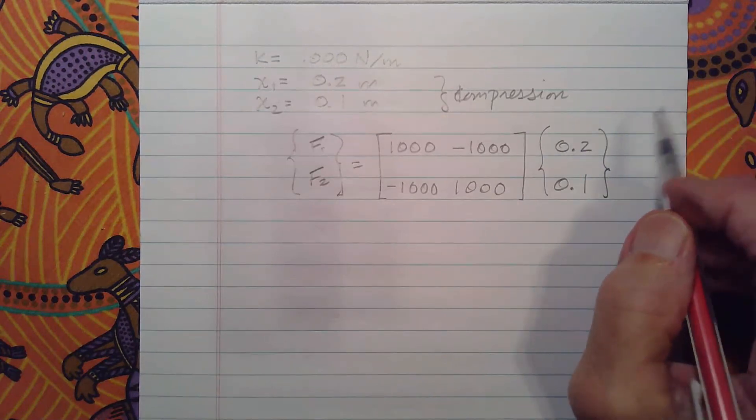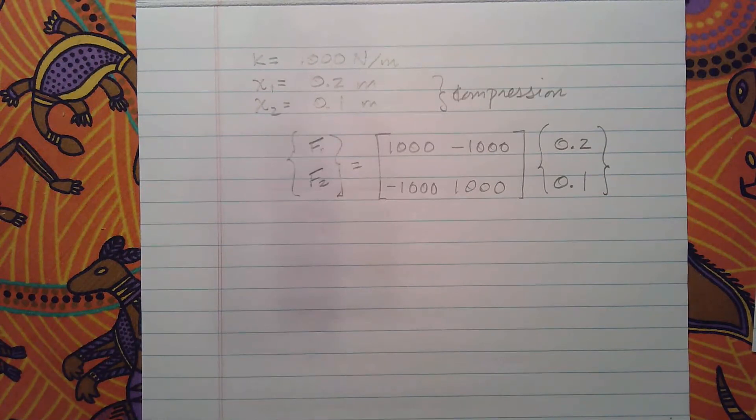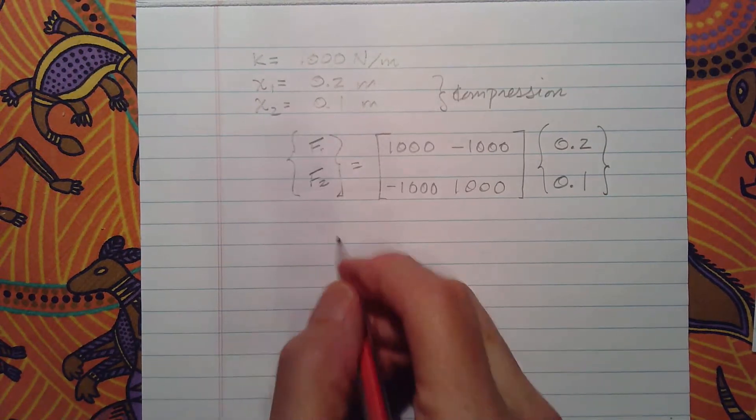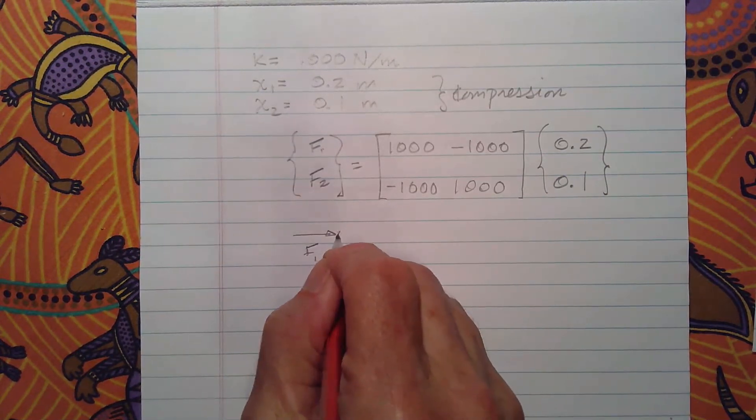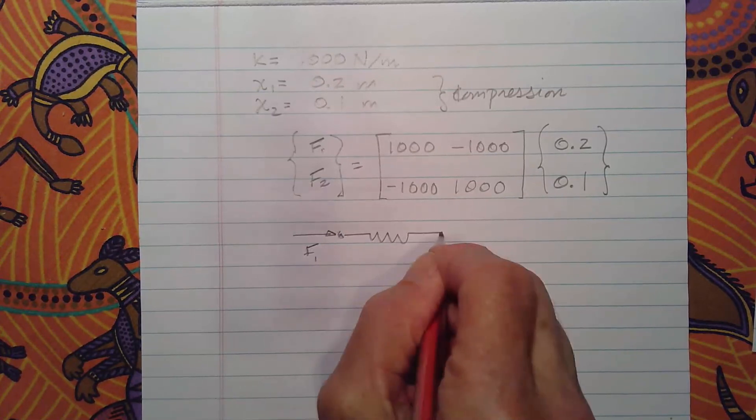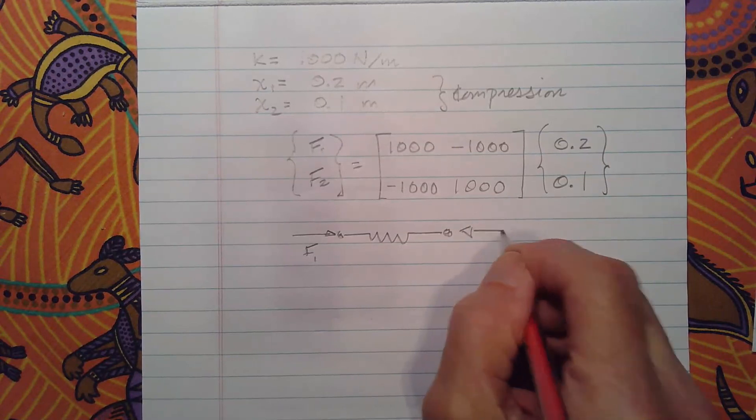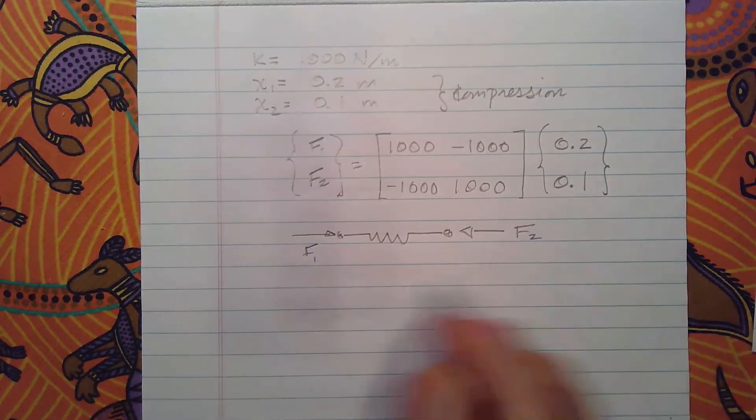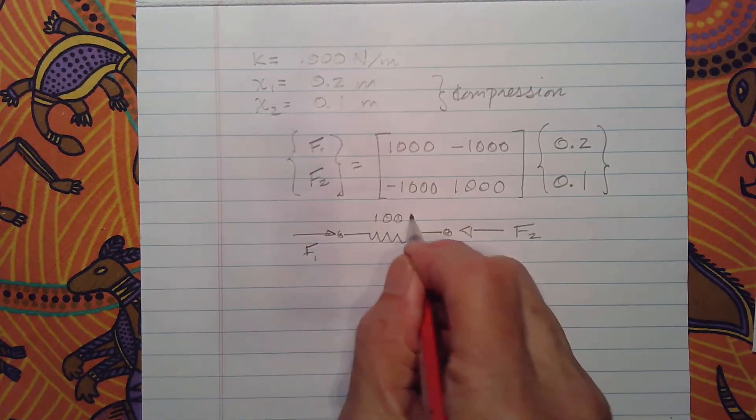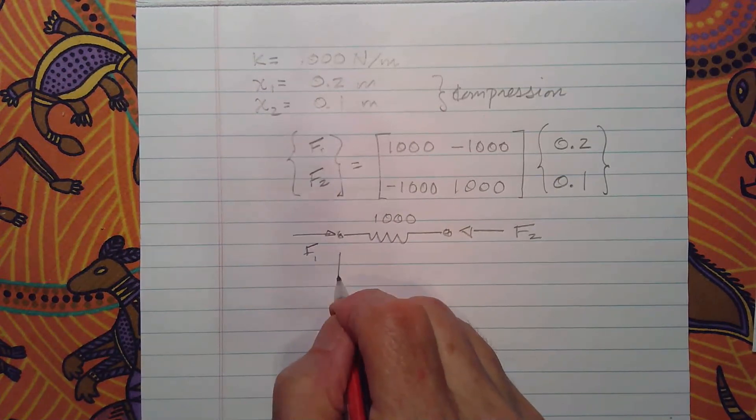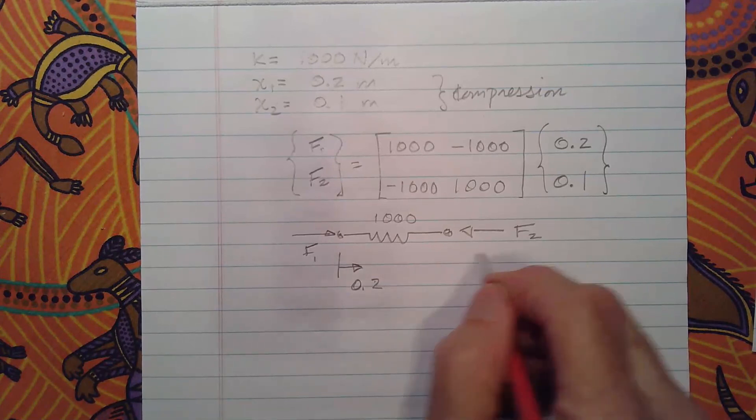And then when we put this into our matrix formulation, we have the problem specified this way and what's unknown here are the forces that we will have on the spring. So what we should see when we work this out: as I said, this is compression so we're going to have f1 here like so, we have our spring, and then f2 on the other end like so. And so we should see that f2 is negative and f1 positive. This is 1000 right here, and we have moved this node 0.2 to the right, we move this node 0.1 to the right meters. Meters, and this is newtons per meter.